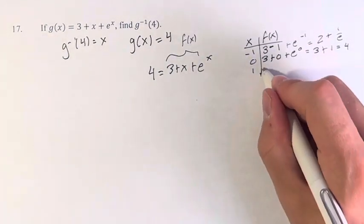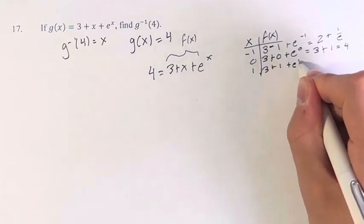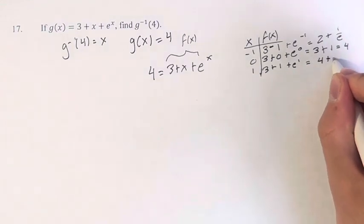And finally, for 1, we have 3 plus 1, plus e to the 1. This is 4 plus e.